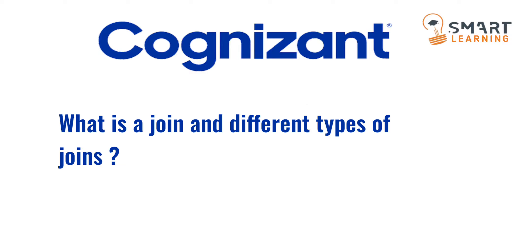Next question is: what is a join and what are all the types of joins? Basically there are two types of joins — first one is inner join and second one is outer join. There are also subtypes for both, like theta join, natural join, left join, and right join.